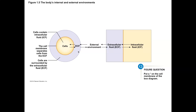Extracellular fluid is outside of the cells. When something changes in the extracellular environment and gets outside of the normal range, that can trigger compensating mechanisms that need to take place in order to get the fluid back to normal. For example, if you intake a lot more sodium and your levels of sodium go up in the blood plasma and interstitial spaces, that can adversely affect your cells, and there have to be compensating mechanisms for getting sodium levels back to normal.